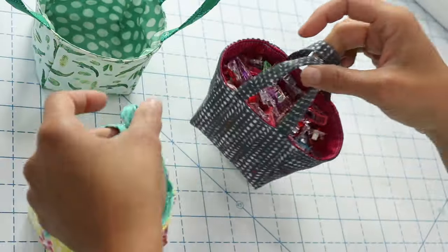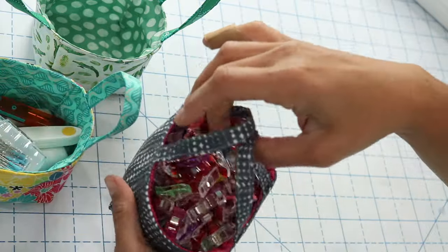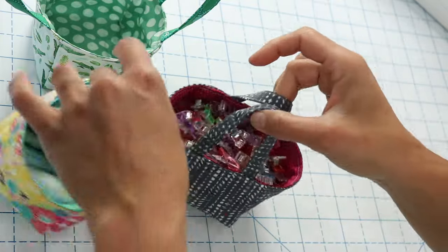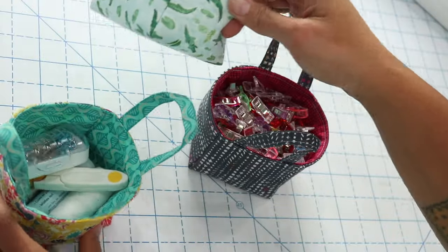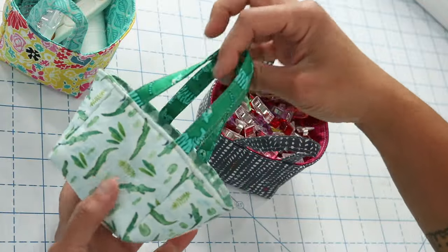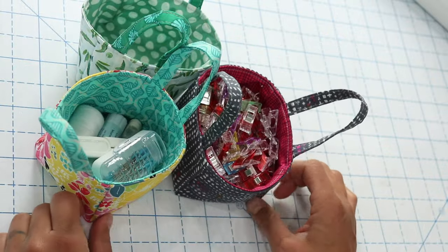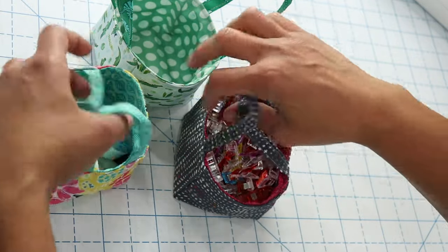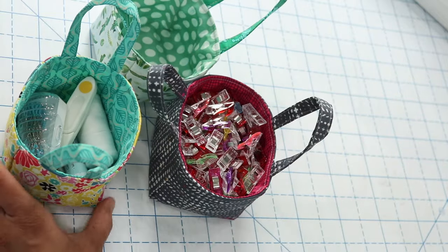All right y'all, so there you have it. That's how I like to make my little teensy baskets. They're small but they do hold a bunch. Here I have sewing clips and essentials. This is great if you need to keep some of your supplies near your sewing machine. I can even see these as little mini Easter baskets. You can put a gift card, a couple chocolates in there and tie it up with a ribbon. If you enjoyed this video please give it a thumbs up and subscribe. Let me know what you plan to use your little teensy baskets for in the comments below and I will see y'all in the next video.